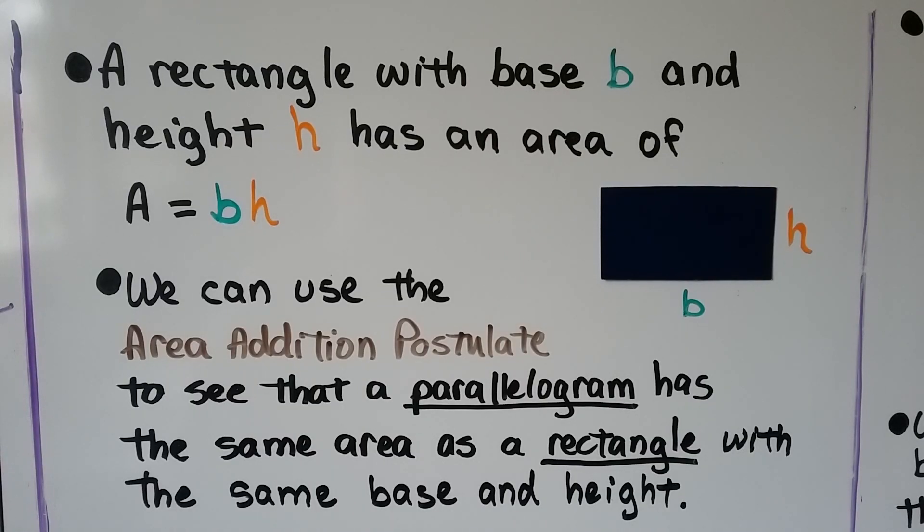A rectangle with base b and height h has an area of a equals bh, so the area is equal to the base times the height. We can use the area addition postulate to see that a parallelogram has the same area as a rectangle with the same base and height.